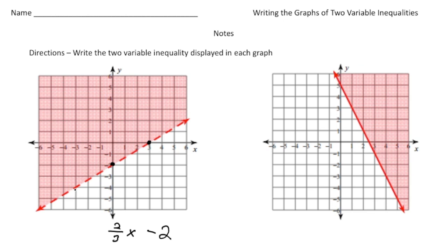Notice we have a broken line. So because it's a broken line, it's either going to be greater than or less than, and because above the line it's shaded, it's going to be greater than. So y is going to be greater than two-thirds x minus two.